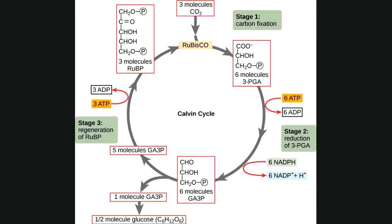Here's the Calvin cycle. For every glucose molecule we need six molecules of CO2 — there are six carbons in glucose. What this process generates is something called G3P (or GA3P), which has three carbons. It takes two GA3Ps to make one molecule of glucose, so three CO2s make one GA3P, and six CO2s make two GA3Ps, which equals one full molecule of glucose.